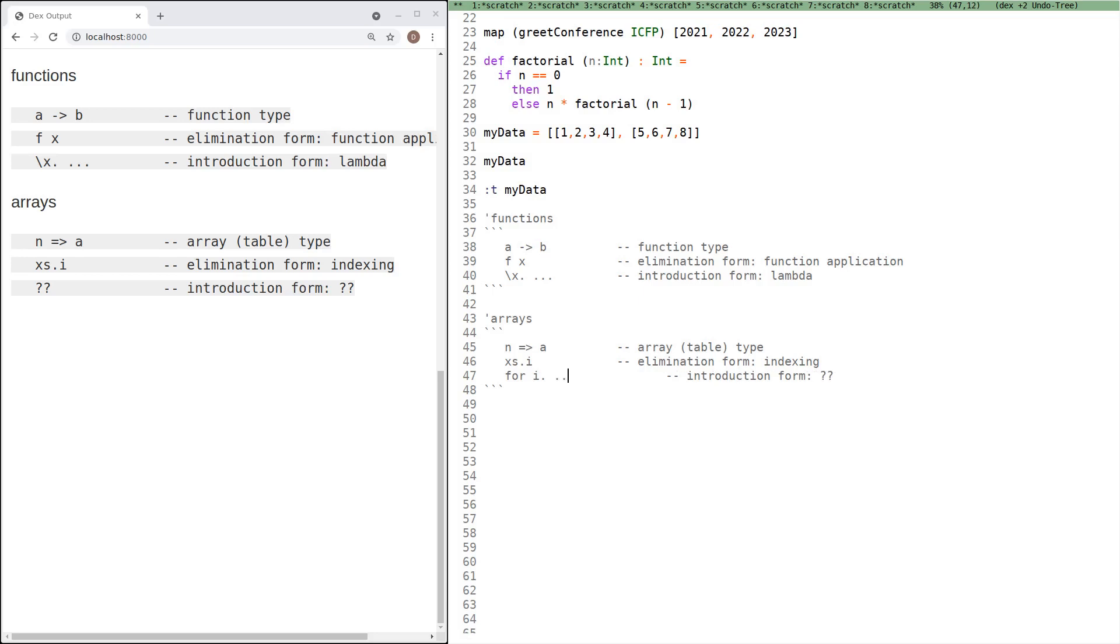So we can now ask what are the corresponding forms for arrays or tables. We've already seen the type of arrays, which is completely analogous to the type of function, just the index set type and the element type. The elimination form is clearly just indexing. But what about the analog of Lambda? Reasoning completely by analogy, we can just create one. So we'll call it for. So for I, and then somebody. This sort of thing is sometimes called build in array combinator languages. But the idea is that this constructs an array whose elements are the result of evaluating the body of the expression at each of the valid indices.